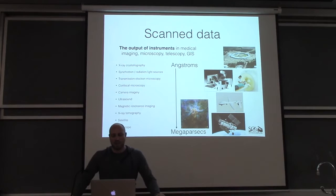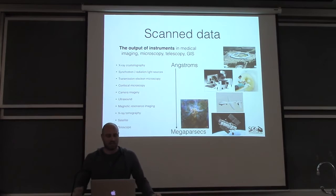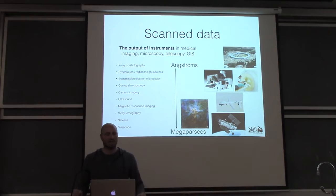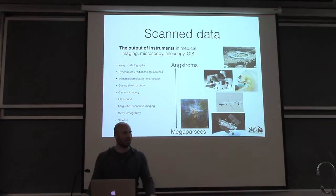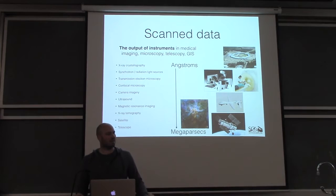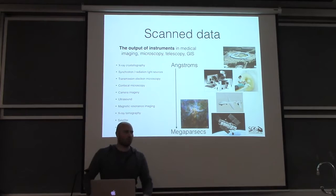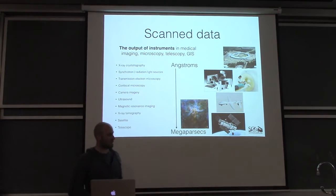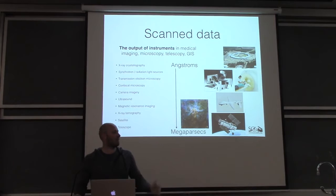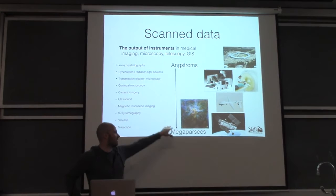The other source of these data is scanned data — from actual imaging devices that generate, in many cases, equally large or larger data than computational codes. This comes from diverse domains such as X-ray crystallography, synchrotron radiation light sources, microscopy devices like SEM and TEM. In medical domains we have ultrasound, MRI, and CT scans. In cosmology and astronomy, satellite and radio telescopes like Hubble generate enormous spectral imagery of the universe. These scales range from the angstrom level all the way up to megaparsecs, with up to petabytes or exabytes of data.